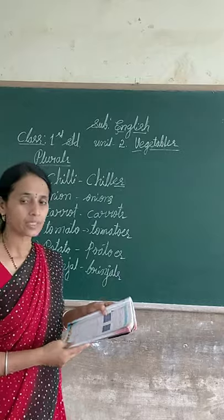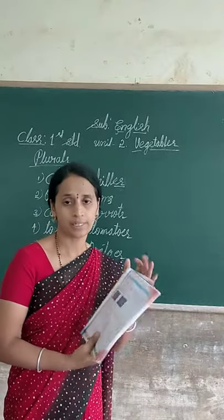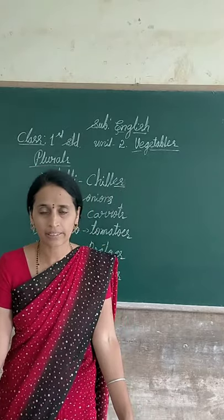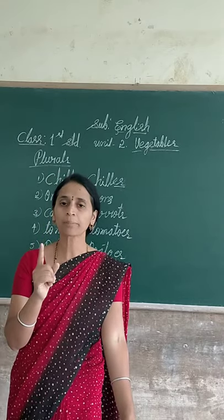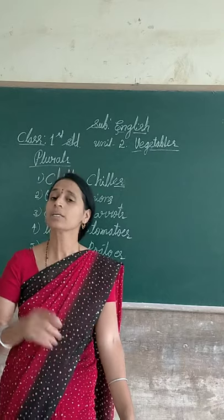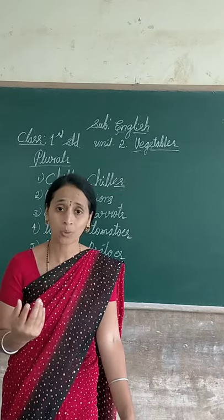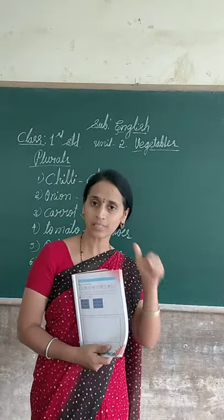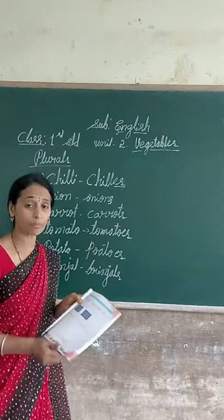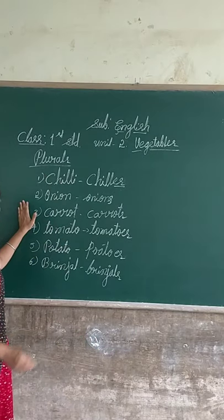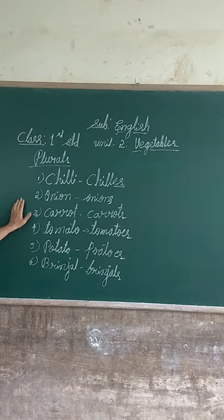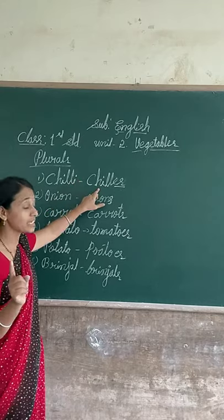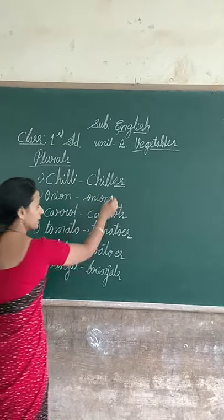Next, there are plurals. Do you know plurals? Singular means one, plural means more. Repeat: singular is one, plural means more. There are some words given. You have to identify singular and also plural. How do we form plurals? See — this vegetable name is chilli. Chillies. This is the plural. Chilli means one, chillies means more. You have to add -es.